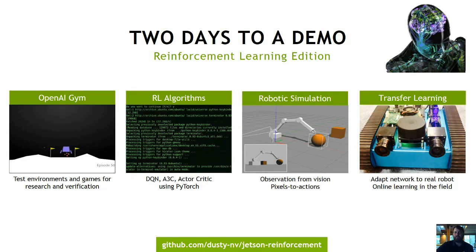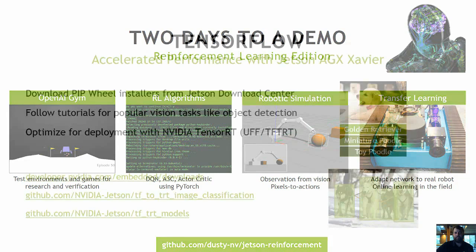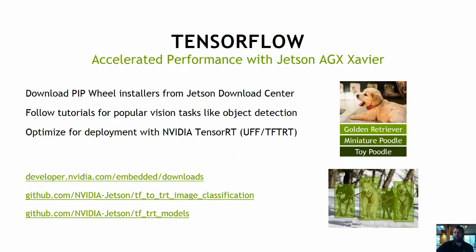We also have a version of two days to a demo geared specifically for reinforcement learning. It starts off playing the OpenAI gym to make sure that the reinforcement algorithms are learning properly. Critically, it provides a C++ API to the reinforcement algorithms, which are commonly implemented in Python using PyTorch or TensorFlow. With the C API, it's much easier to integrate into existing robots and devices which are predominantly based in C, ROS, or Isaac. This tutorial also provides virtual scenarios for the robot to learn in simulator and gradually increases the complexity of tasks to improve training success.